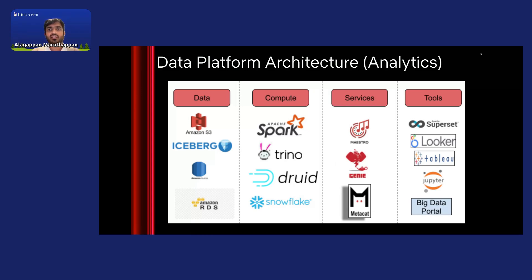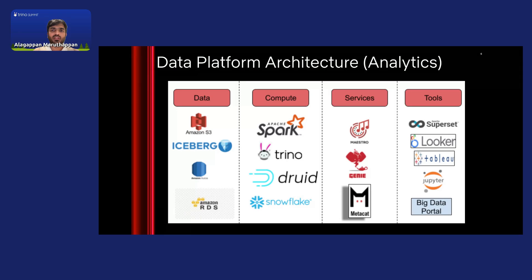Metacat is our internal federated metadata service — also an open-source project. It's comparable with systems like Hive Metastore, but it not only stores metadata information about big data tables, but can also store and serve metadata about other data sources such as RDBMS, Cassandra, Redshift, etc. With respect to tools, we use a wide variety of BI tools including Superset, Looker, and Tableau. We use Jupyter notebooks, and we have our own internal big data portal for users to run queries, discover data, and schedule workflows, along with many other Java application internal tools that connect with Trino.